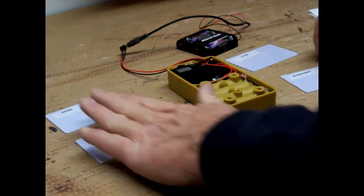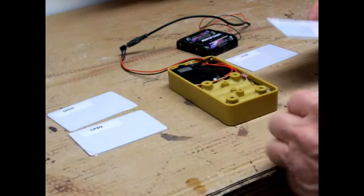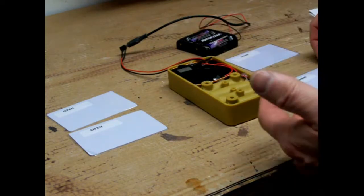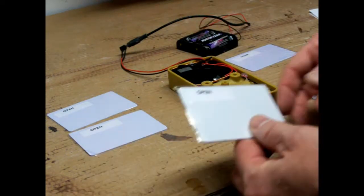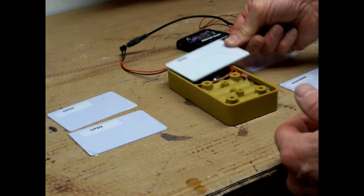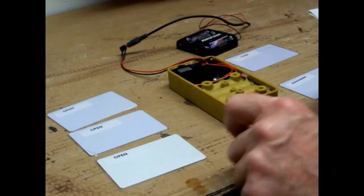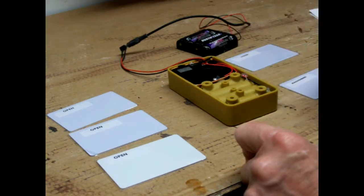So again, if you want to add an additional opening card, all you have to do is take the management card, scan it. It'll play an additional tune just like that. And you would take that new opening card, scan it as well. Now I've got three cards that have been scanned into this lock. And the lock resets.